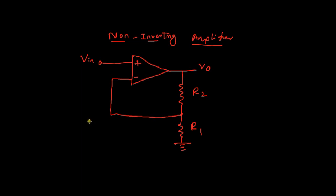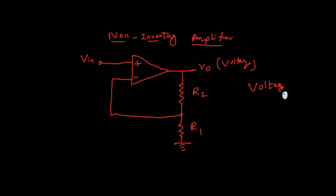We need to understand what is the feedback topology of this amplifier. As you can see the output — this is our voltage. The feedback is driven from the voltage, so first we have identified it is voltage-driven.